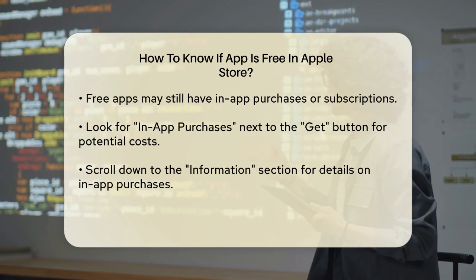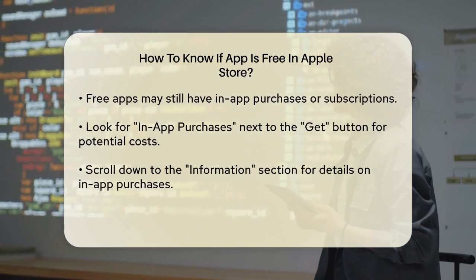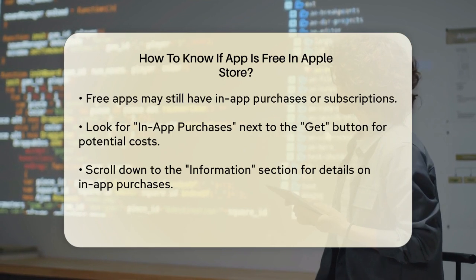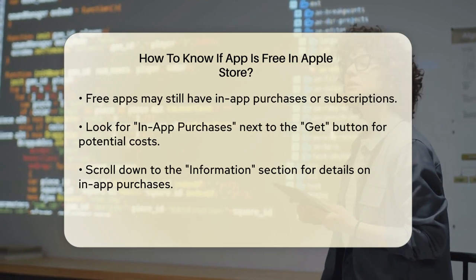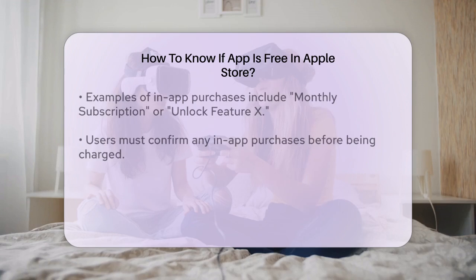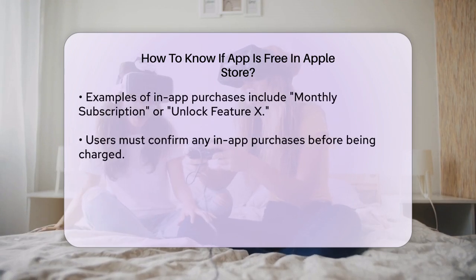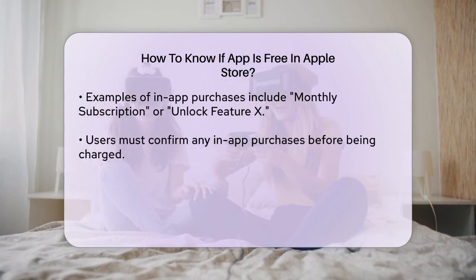Here you'll see a list of items you can buy within the app for a fee. For example, if you see 'Monthly Subscription' or 'Unlock Feature X', it means you'll need to make a purchase to access those features.